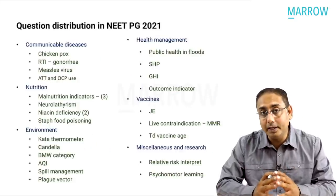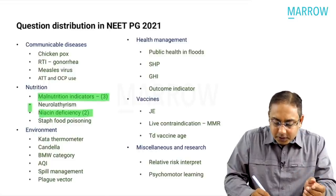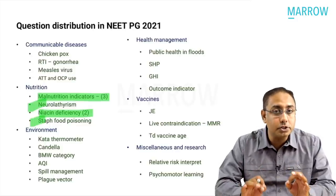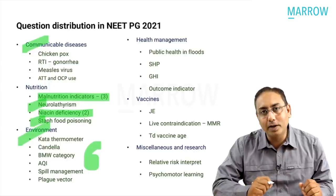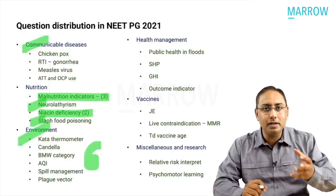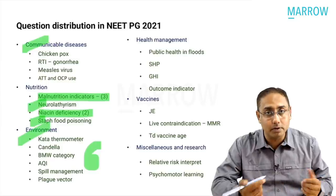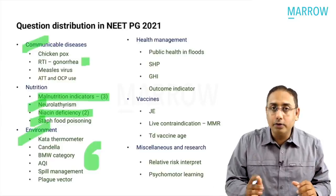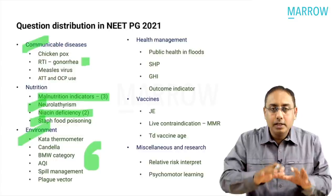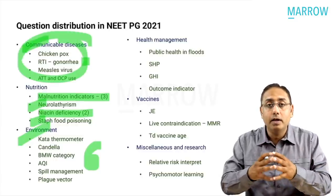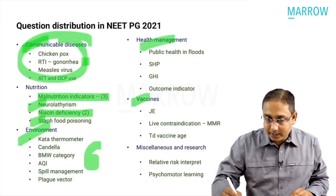Looking at nutrition topics, many MCQs were from malnutrition indicators, vitamin deficiencies, neurolathyrism, and staphylococcal food poisoning. There were seven MCQs from nutrition alone, six from environment, and then communicable disease questions with big overlaps - like chicken pox could come from pediatrics, OB-GYN, microbiology, or preventive medicine. So let's focus on pure hardcore MCQs from nutrition, environment, health management, vaccines, and miscellaneous topics.